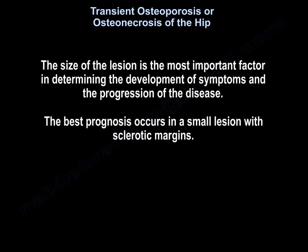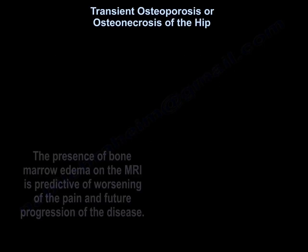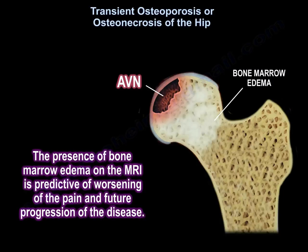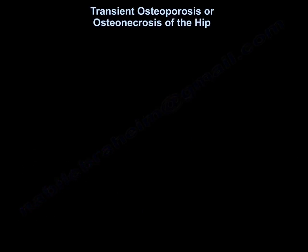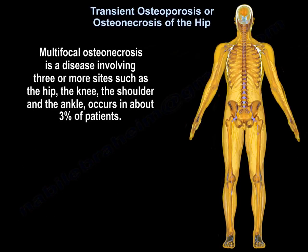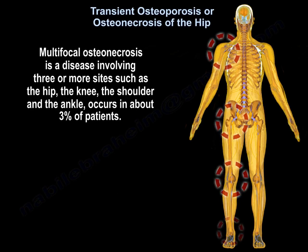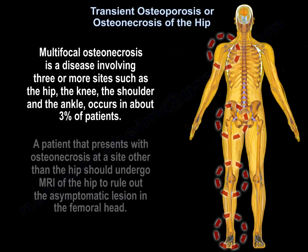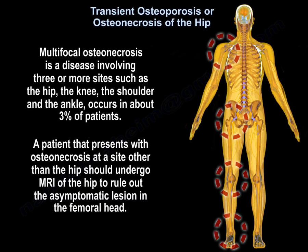The size of the lesion is the most important factor in determining the development of symptoms and the progression of the disease. The best prognosis occurs in a small lesion with sclerotic margins. The presence of bone marrow edema on MRI is predictive of worsening of the pain and future progression of the disease. Multifocal osteonecrosis is a disease involving three or more sites such as the hip, the knee, the shoulder, and the ankles, and it occurs in about 3% of patients. A patient presenting with osteonecrosis at a site other than the hip should undergo MRI of the hip to rule out an asymptomatic lesion in the femoral head.